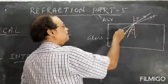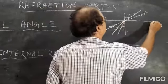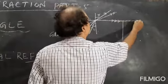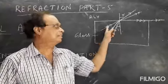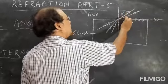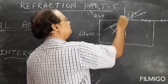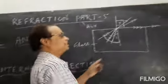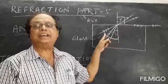For a particular angle of incidence, the angle of refraction will be 90 degrees. The refracted ray will pass along the surface of separation of the two mediums. So for this particular angle of incidence, the angle of refraction is 90 degrees.